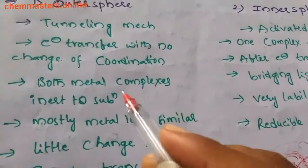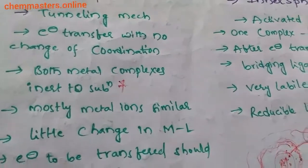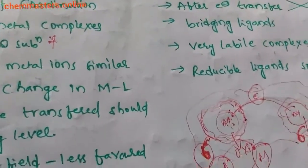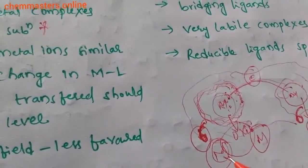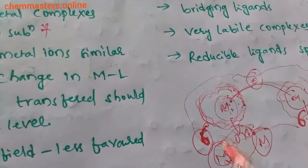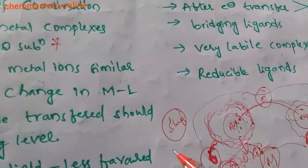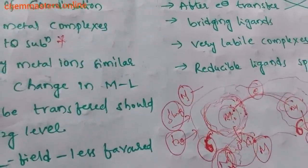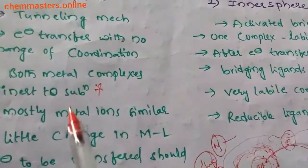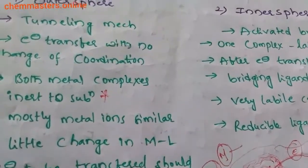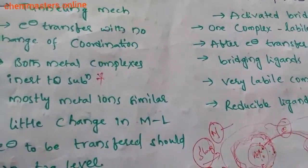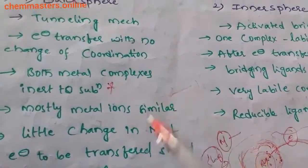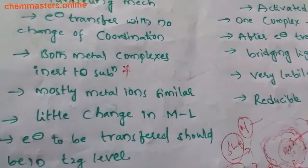Another important point: both metal complexes must be inert to substitution. We have already discussed lability and inertness of metal complexes. Factors affecting inertness include strong ligands, the pattern of electrons in t2g, and the charge on the metal. In outer sphere mechanism, both metal complexes must be inert. If you observe two inert complexes in a reaction, the electron transfer is occurring through outer sphere mechanism.